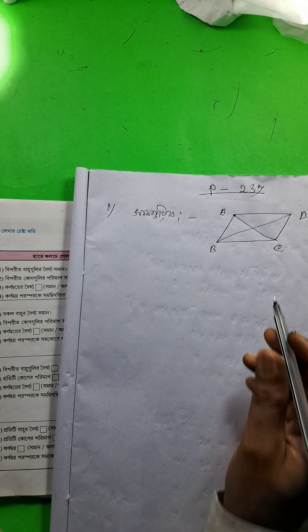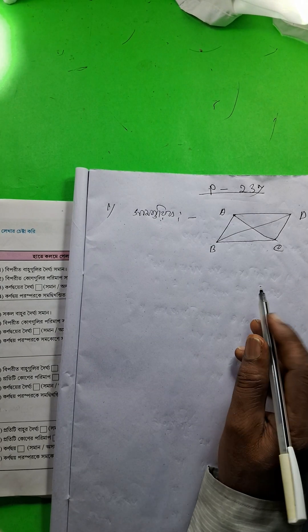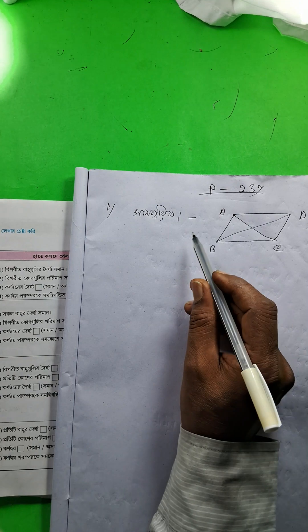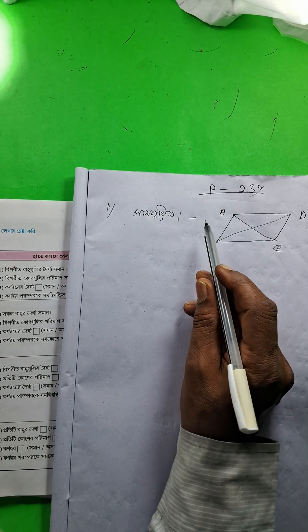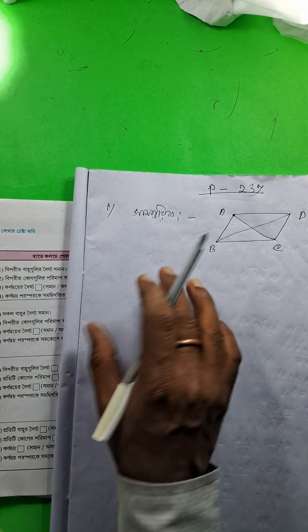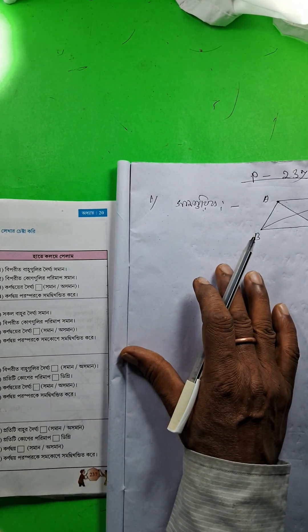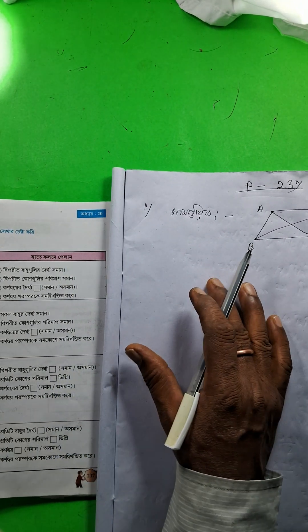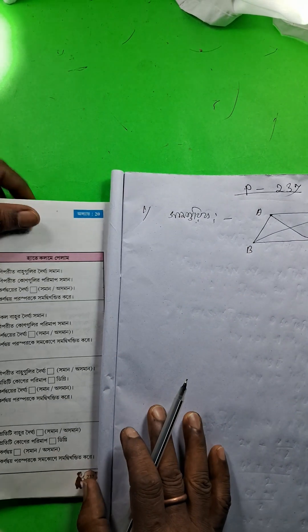Hello, everyone. Today we are starting to show you the class 7th of 14th century. Page number 233. You can see the number 233.